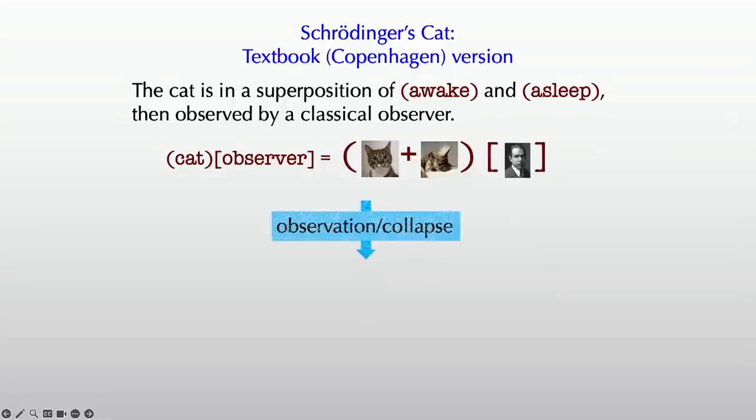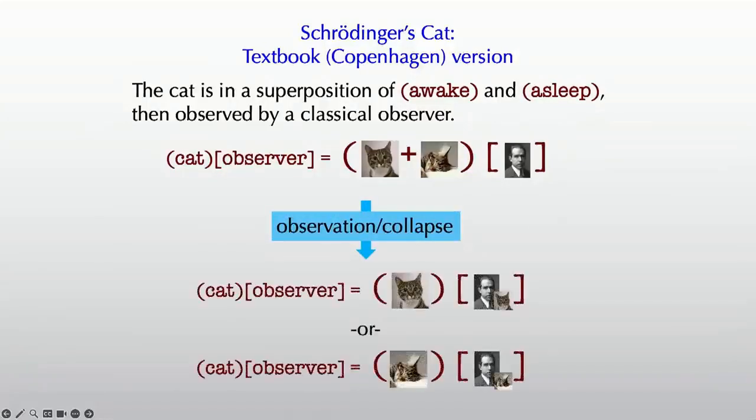And the story is the observer opens the box, observes the cat, the wave function collapses, and now either the cat's awake and the observer saw it awake or the cat's asleep and the observer saw it asleep. That's the Copenhagen story.